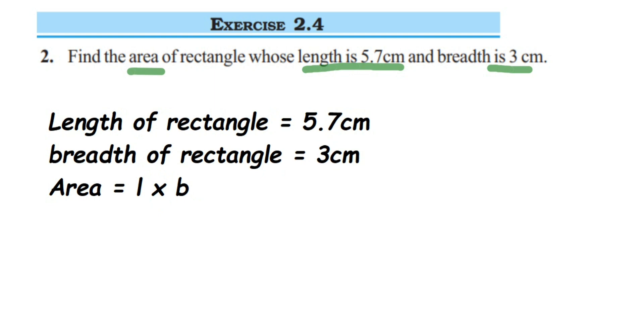This is equal to 5.7 centimeter multiplied by breadth which is 3 centimeter. Now instead of multiplying 5.7, we're going to multiply 57 and 3. So 57 into 3 when you do it is 171, right?